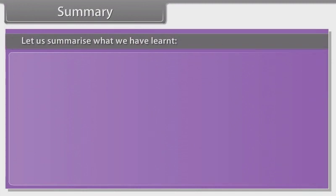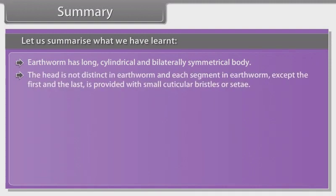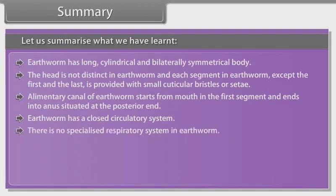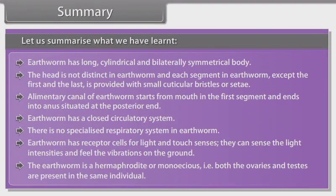Summary. Earthworm has a long, cylindrical and bilaterally symmetrical body. The head is not distinct in earthworm, and each segment except the first and last is provided with small cuticular bristles or setae. The alimentary canal of earthworms starts from the mouth in the first segment and ends into the anus at the posterior end. Earthworm has a closed circulatory system. There is no specialized respiratory system in earthworm. Earthworm has receptor cells for light and touch senses; they can sense light intensities and feel vibrations on the ground. The earthworm is a hermaphrodite or monoecious, that is, both the ovaries and testes are present in the same individual.